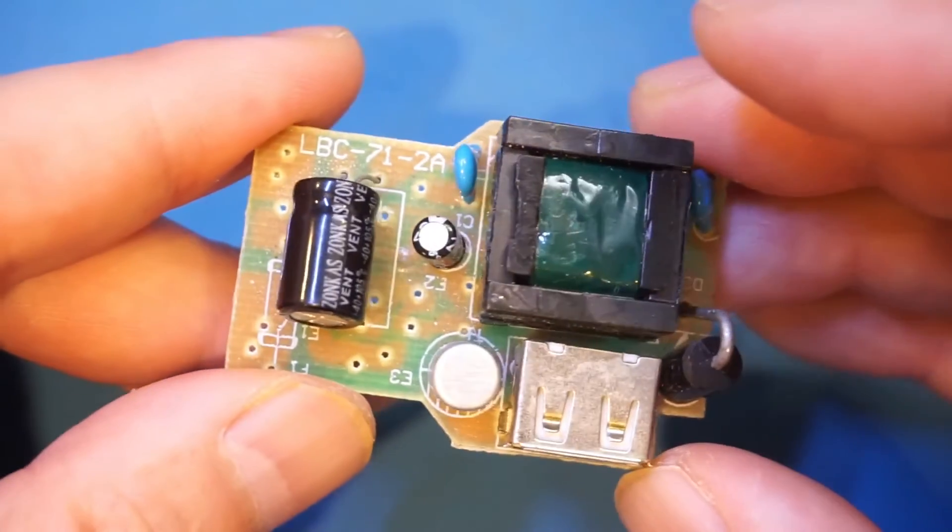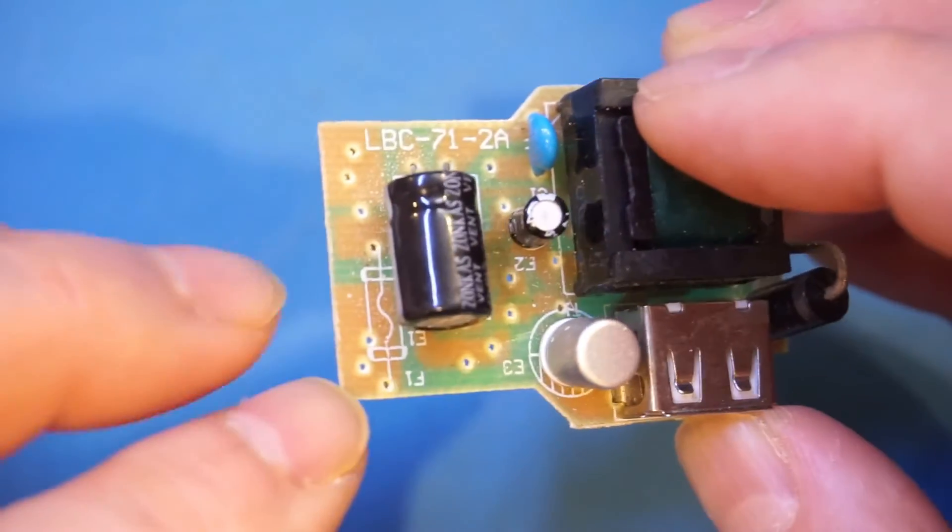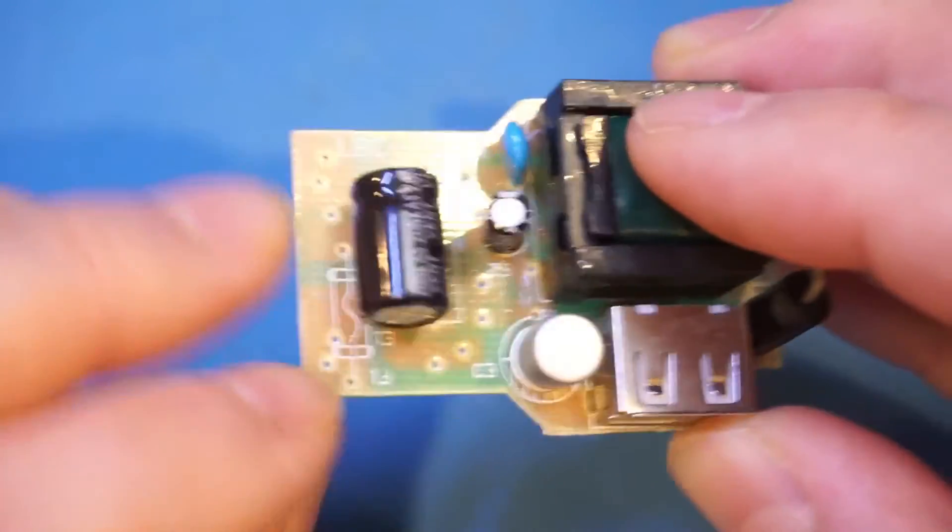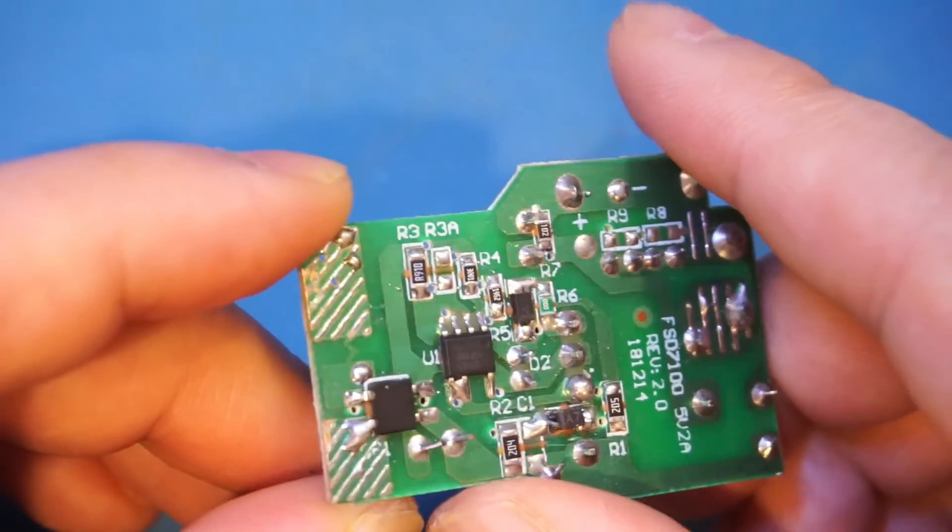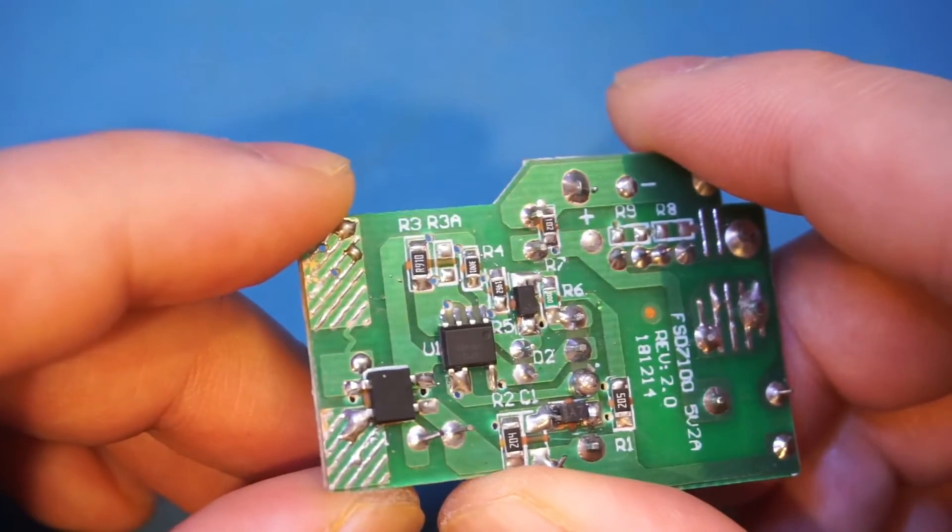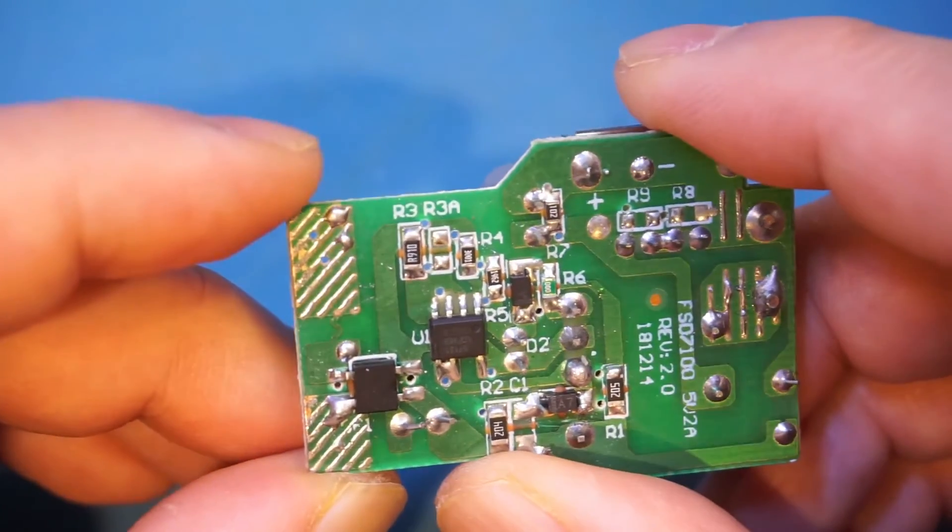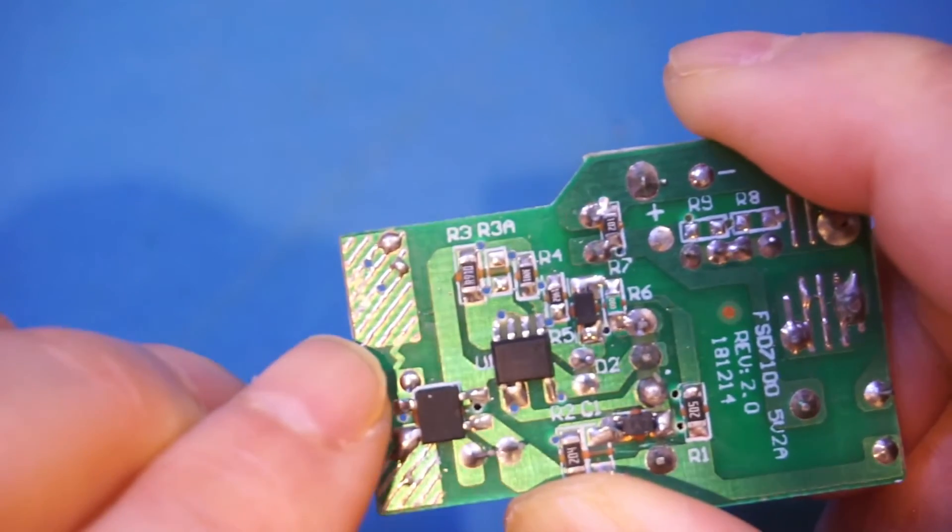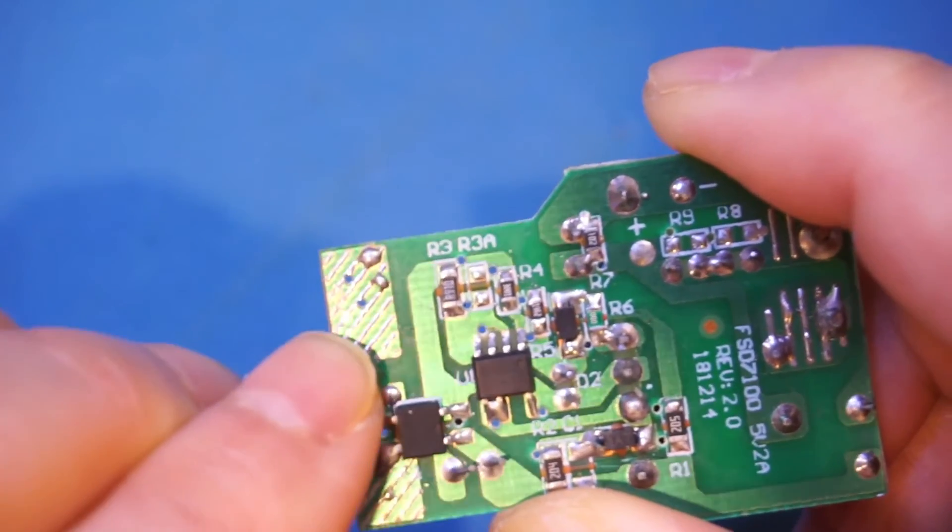And where is the fuse? You can see we have a footprint for a fuse here, but there is no fuse installed on the side. Oh, wait a minute. You've got to be kidding me. Yup. You see here, they actually use this PCB trace as a fuse. Wow.